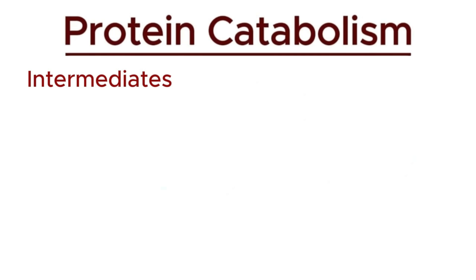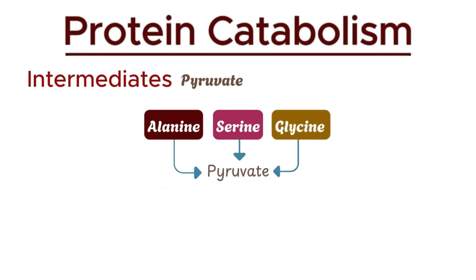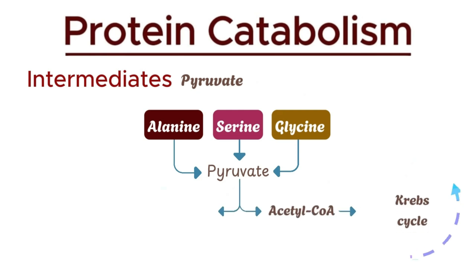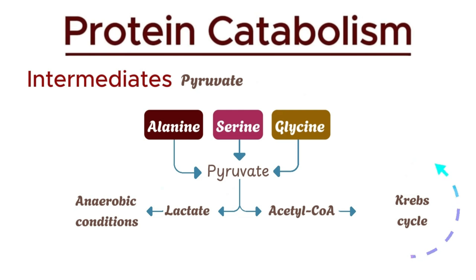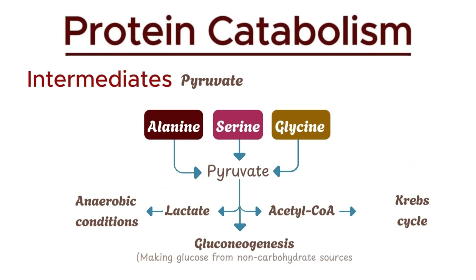First up, pyruvate. Amino acids like alanine, serine, and glycine break down into pyruvate. Pyruvate is a versatile intermediate. It can either be converted into acetyl-CoA to enter the Krebs cycle, or into lactate during anaerobic conditions. Pyruvate is also essential for gluconeogenesis, the process of making glucose from non-carbohydrate sources.